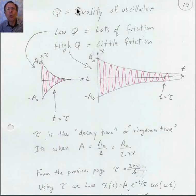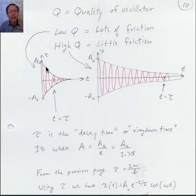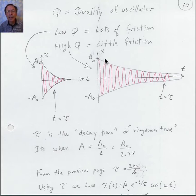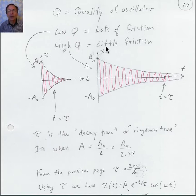Now let's talk about something called Q — the quality of an oscillator. In the FET simulation, when friction was high the oscillator quickly slowed down and stopped; when friction was small, the oscillation lasted quite a bit longer. This Q is called the Q factor in electrical engineering. Low Q — that's bad quality — means a lot of friction. High Q — good quality — has only a little bit of friction.